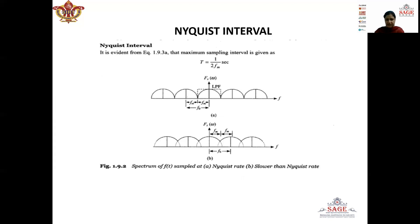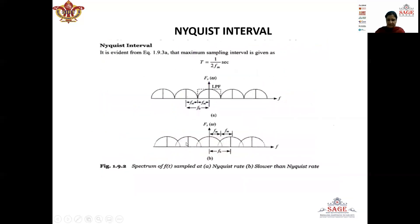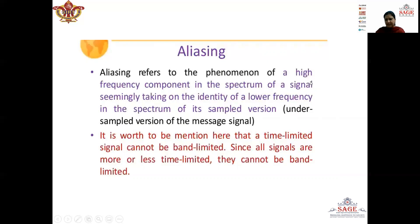Now we will see the condition when the signal is sampled at a rate lower than the Nyquist rate, that is when f_naught < 2fm. In that case the neighboring spectrums will overlap with each other, as shown in this figure. This overlapping causes information loss. This phenomenon is known as aliasing. In aliasing, the higher frequency tail of one spectrum overlaps with the lower frequency tail of the neighboring spectrum, corrupting the data. So aliasing is when a high frequency component in the spectrum of a signal takes the identity of a lower frequency in the spectrum of the sampled version.